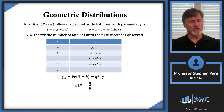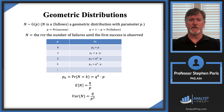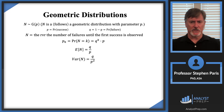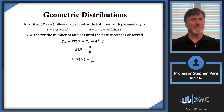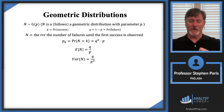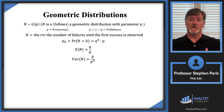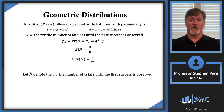The variance of this geometric distribution is Q/P². So to summarize: E[N] = Q/P and Var(N) = Q/P². You might've seen the geometric distribution described in a slightly different way. A common alternative description counts the number of trials before the first success rather than the number of failures.